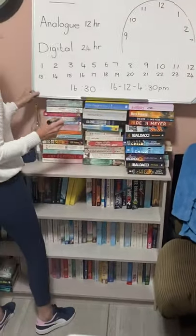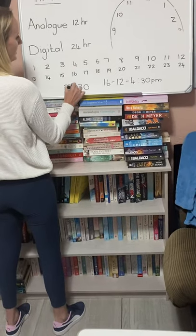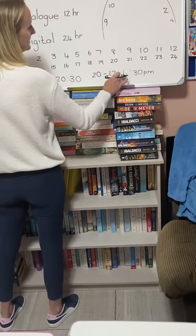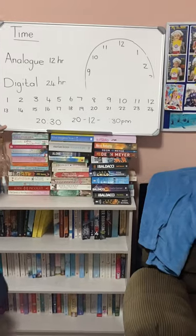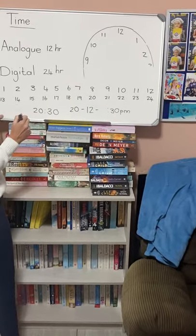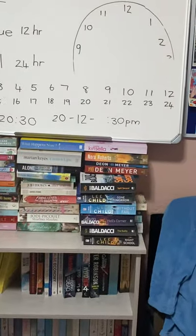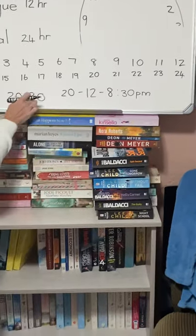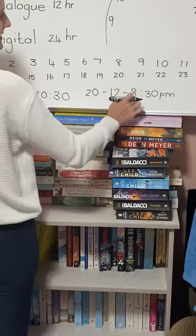Because it's in the afternoon hours into evening hours. And if I've got — let's change this one now to 20:30 — so I take my 20 and I take away 12. What is 20 take away 12? Eight. So I know that 20:30 would be 8:30, because I'm just taking 12 away and I know what my time would be.